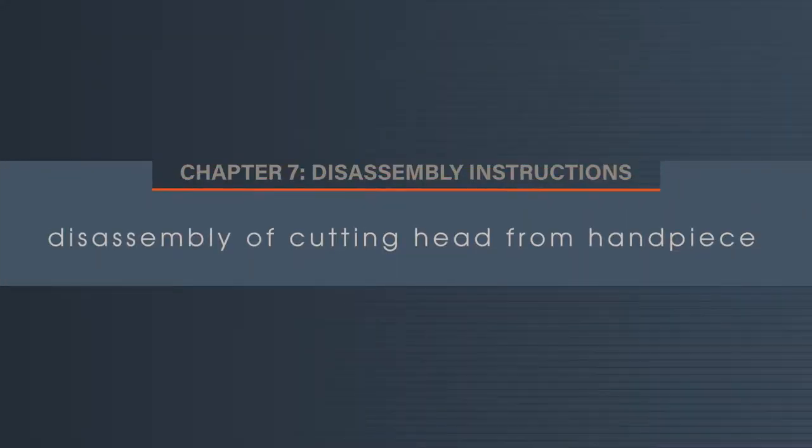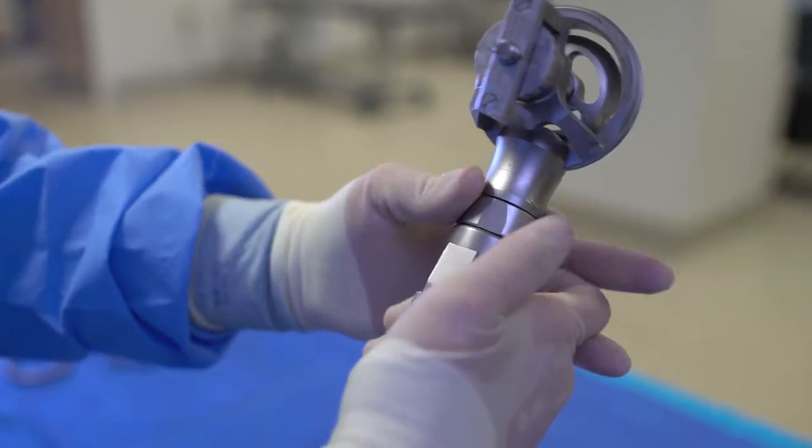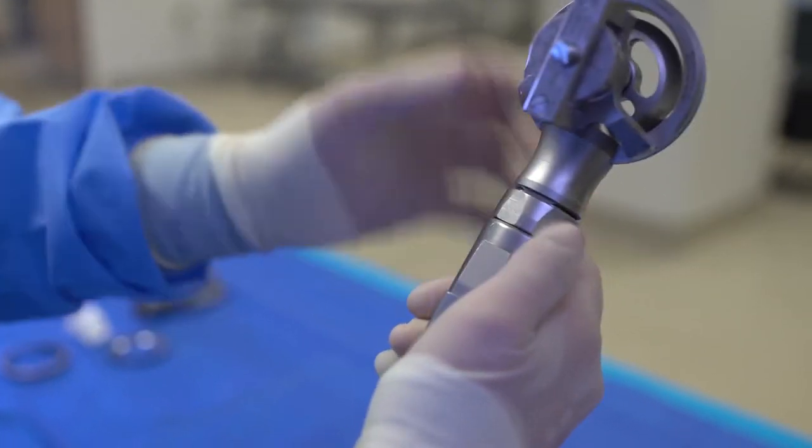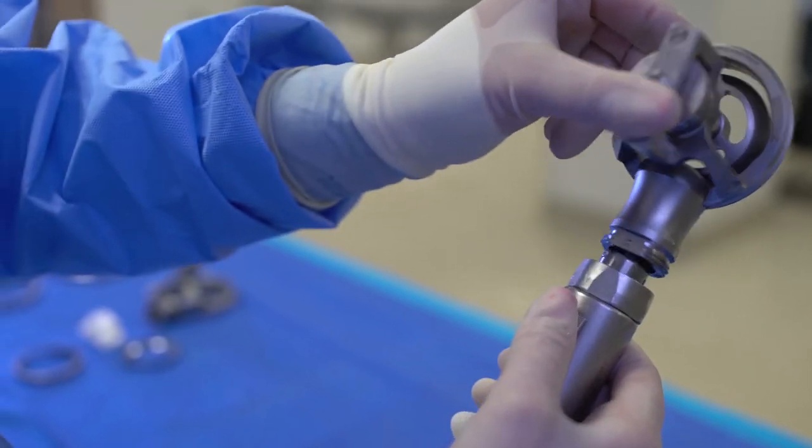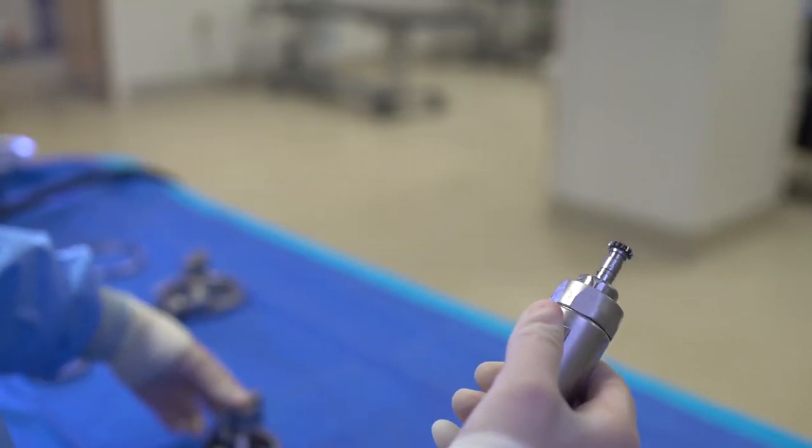After the removal of the lock ring and excision ring, you may now remove the cutting head from the handpiece. With the device lever-side down, turn the locking knob to loosen and remove the housing and frame from the handpiece.